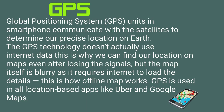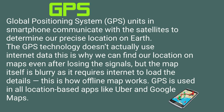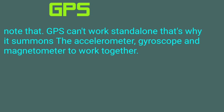GPS — Global Positioning System. GPS units in smartphones communicate with satellites to determine our precise location on Earth. GPS technology doesn't actually use internet data, which is why we can find our location on maps even after losing signals, but the map itself is blurry as it requires internet to load the details — this is how offline maps work. GPS is used in all location-based apps like Uber and Google Maps. Note that GPS can't work standalone, that's why it summons the accelerometer, gyroscope and magnetometer to work together.